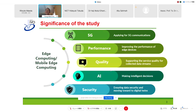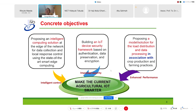From this situation, we try to figure out some concrete objectives in our proposal. First, in the intelligent control aspect, we want to propose an intelligent edge computing solution for data collection and local response control using smart edge computing. Second, in the improved security area, we want to bring an IoT device security framework based on authentication, data privatization, and encryption. Third, for enhanced performance of the agriculture IoT system, we propose modern load distribution and data processing associated with crop production and farming practice.